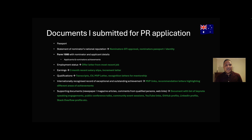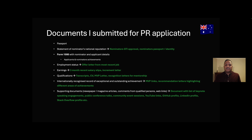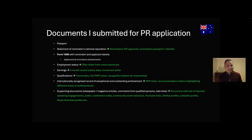These are the documents I submitted, and they are mostly similar to the EOI documents. The additional documents related to the nominator include the nominator's prominence — in my case this was the GTI approval letter itself, because my nominator was also a GTI recipient — so his GTI grant letter, along with the nominator's passport. We need to submit some identity proof for the nominator; it could be a passport or a national ID.